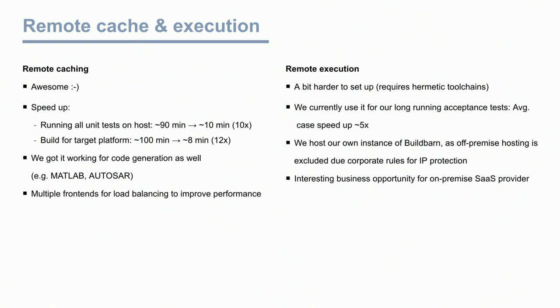The remote caching server we host multiple times for better load balancing. We're also using remote execution, though it was harder to set up correctly — it requires much more hermetic toolchains, something we screwed up a bit at the beginning. We're currently using it for long-running acceptance tests, where we've achieved about 5x speedup compared to before. We currently use BuildBarn, hosted ourselves on our on-premise cloud. We know some big cloud companies offer this as a service, but we're not allowed to compile source code in the cloud of a company that also develops autonomous cars — but if you're in that business, we think it's a really good business opportunity.